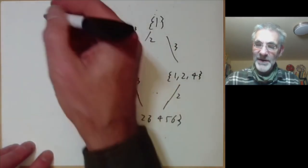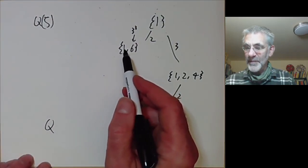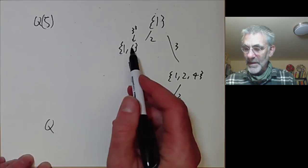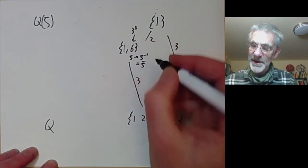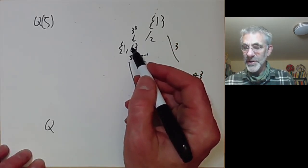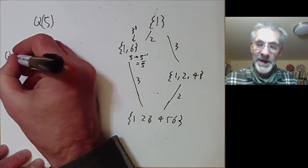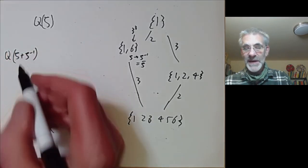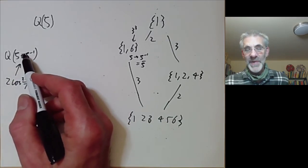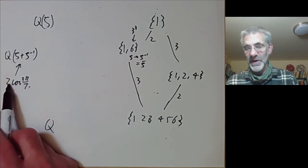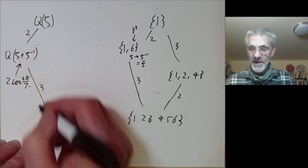These correspond to fields. At the top is Q(ζ), at the bottom is Q. The subgroup {1, 6} corresponds to the field fixed by complex conjugation — the automorphism sending ζ ↦ ζ⁻¹ — which is the real subfield Q(ζ + ζ⁻¹) = Q(2cos(2π/7)). We studied this field in earlier examples, using cos(2π/7) as a generator instead.